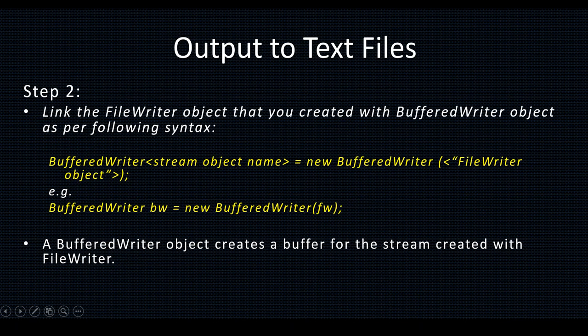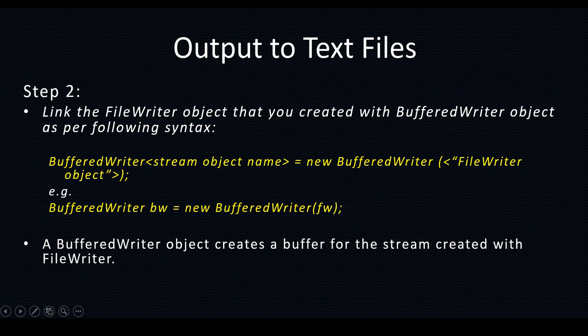Step 2: link the FileWriter object that you created with a BufferedWriter object as per the following syntax. You already created FileWriter object FW, and now you are going to link it to the BufferedWriter object. BufferedWriter is written as a single word with capital B and capital W. The syntax is: BufferedWriter BW = new BufferedWriter(FW). So FW is the object already created using FileWriter, and it has been linked to this BufferedWriter.